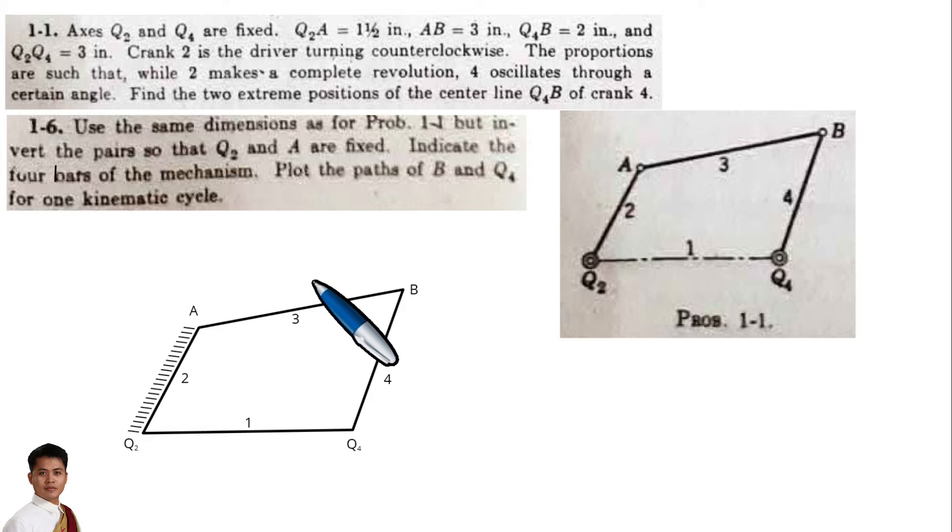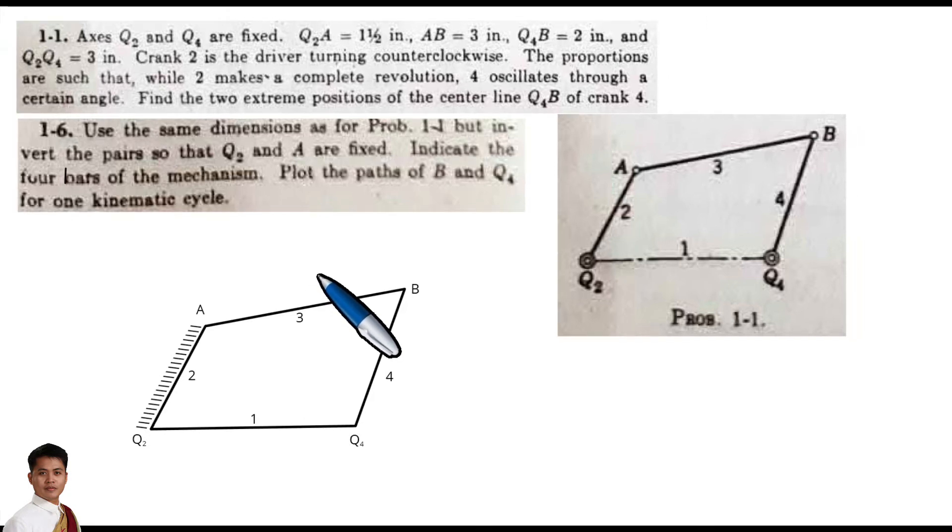Indicate the 4 bars of the mechanisms, plot the path of B and Q4 for one kinematic cycle.